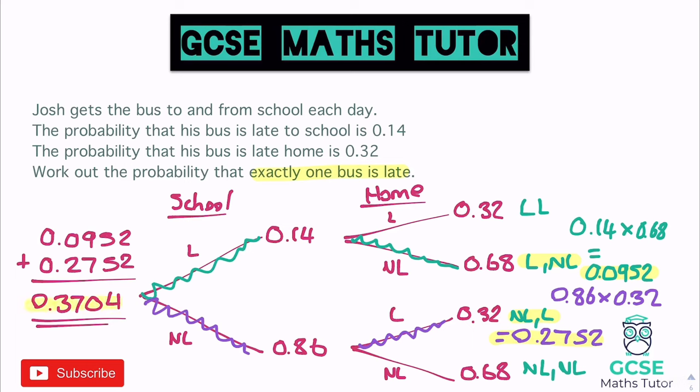Slightly nastier in terms of the decimals, but the process is the same — it's all about constructing that tree very carefully and making sure you go through the appropriate routes. If you're happy to do this without a tree you can, but I'd advise using the visual method as many people find it much easier.